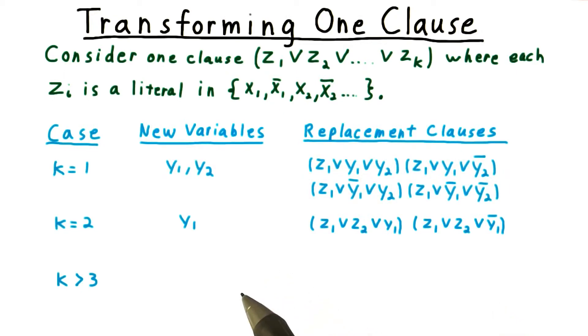We can play the same trick when there's just one literal, Z1, in the original clause. This time, we need to introduce two new variables, which we'll call Y1 and Y2. Then, we replace the original clause with these four.